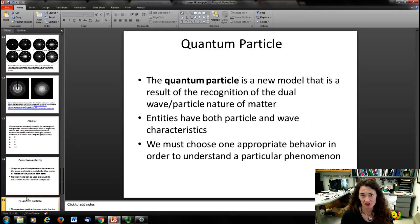So, we've introduced ourselves now the idea of a quantum particle. This quantum particle is a new model that's a result of the recognition of this wave-particle nature of matter. Entities will have both particle and wave characteristics. And what experiment you're doing dictates what kind of behavior that you're going to see. But it's a mistake to think that matter is a wave sometimes and a particle sometimes. You really should think that matter is a wave and a particle all the time. And what kind of experiment you do dictates what you see in that experiment. The wave or the particle nature.